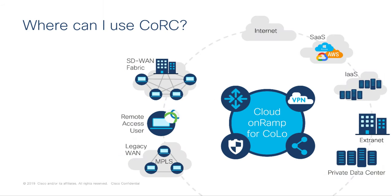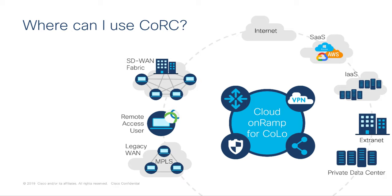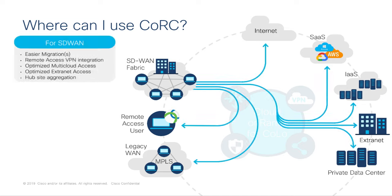But you may be asking yourself: aside from providing automated access into the co-location and out to the cloud, what else can it provide? Couldn't I just put an SD-WAN router in the co-location and accomplish the same thing? The true benefit to Cisco Cloud onRamp for Colocation is its ability to host virtual machines or virtual network functions — VNFs for short. VNFs are network functions that are virtualized, such as a load balancer, firewall, WAN optimization appliance, or even an SD-WAN router. SD-WAN policy can then be used to funnel users' traffic through these functions.